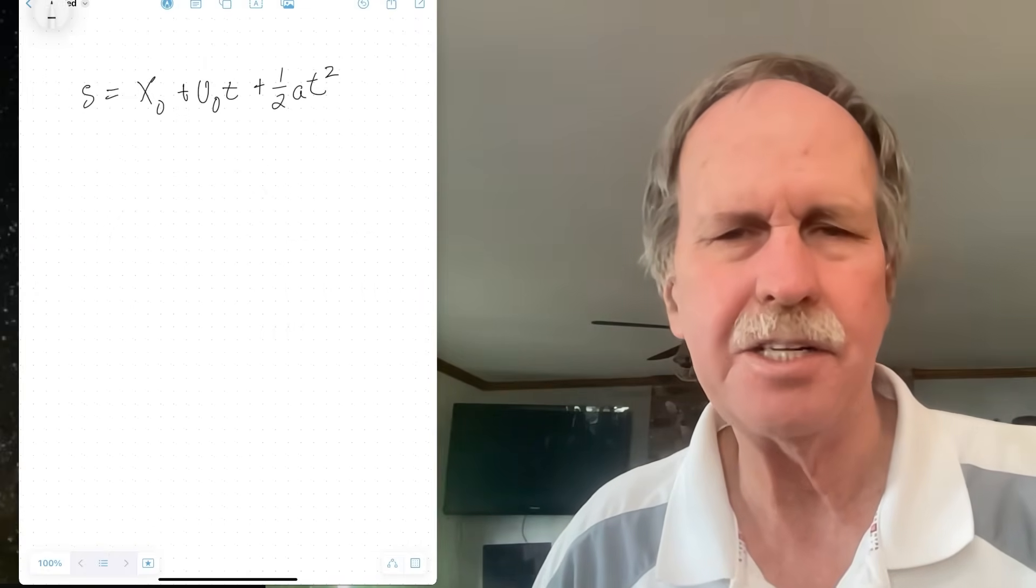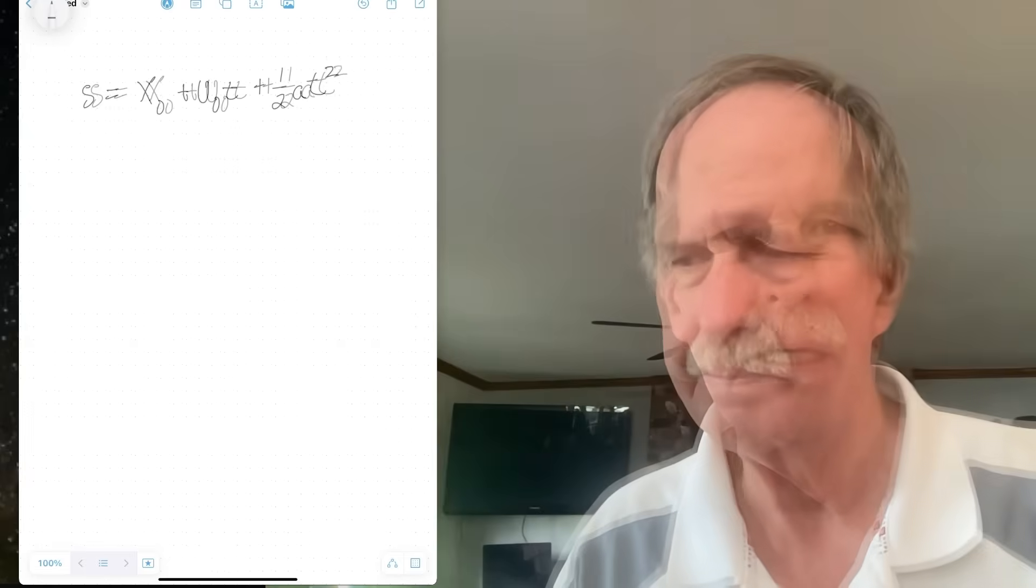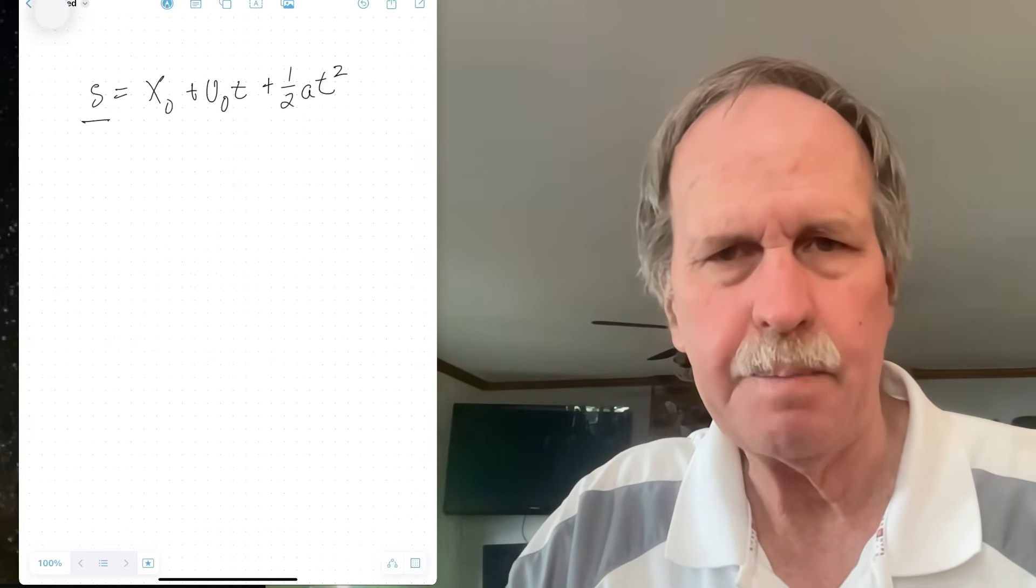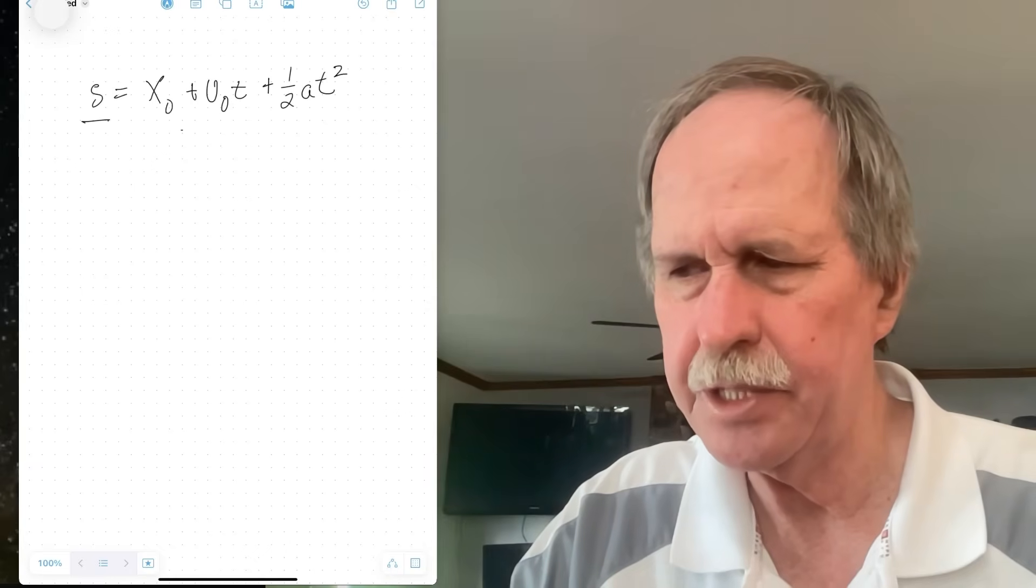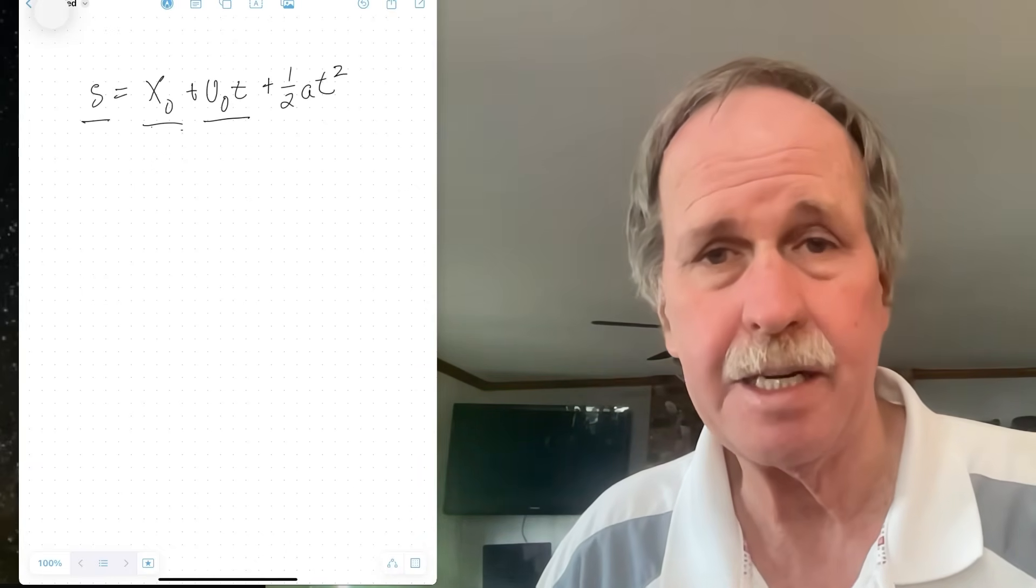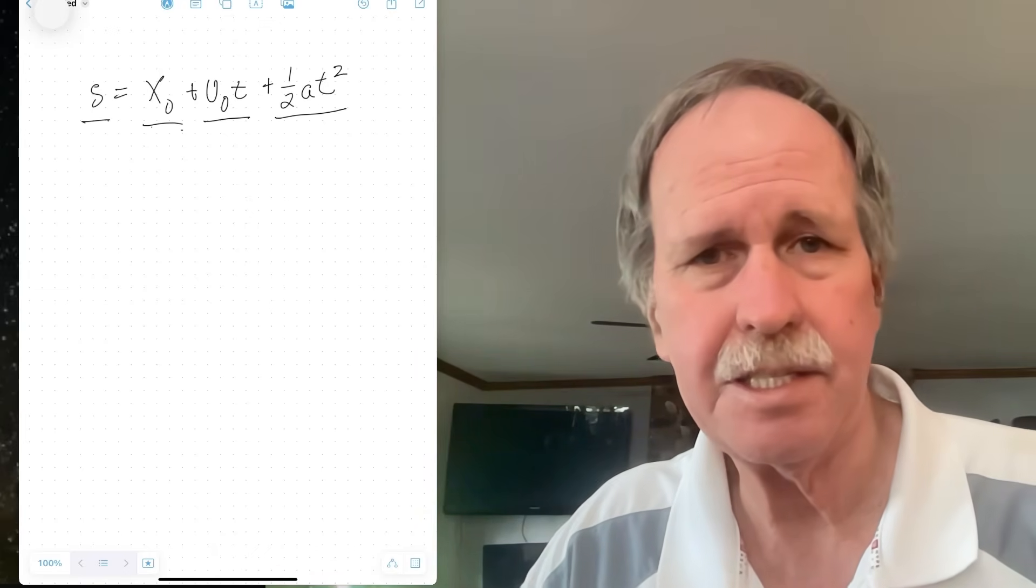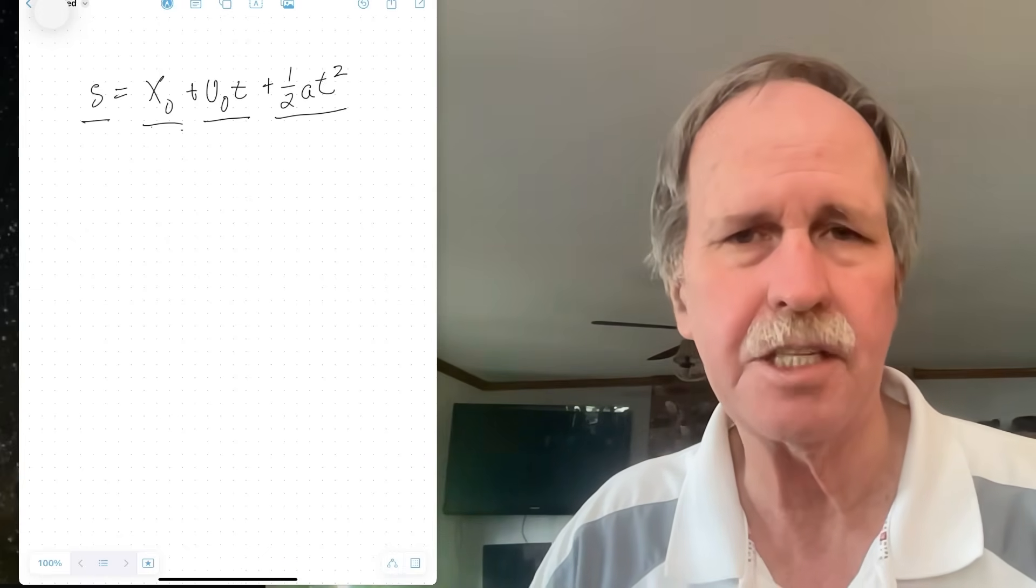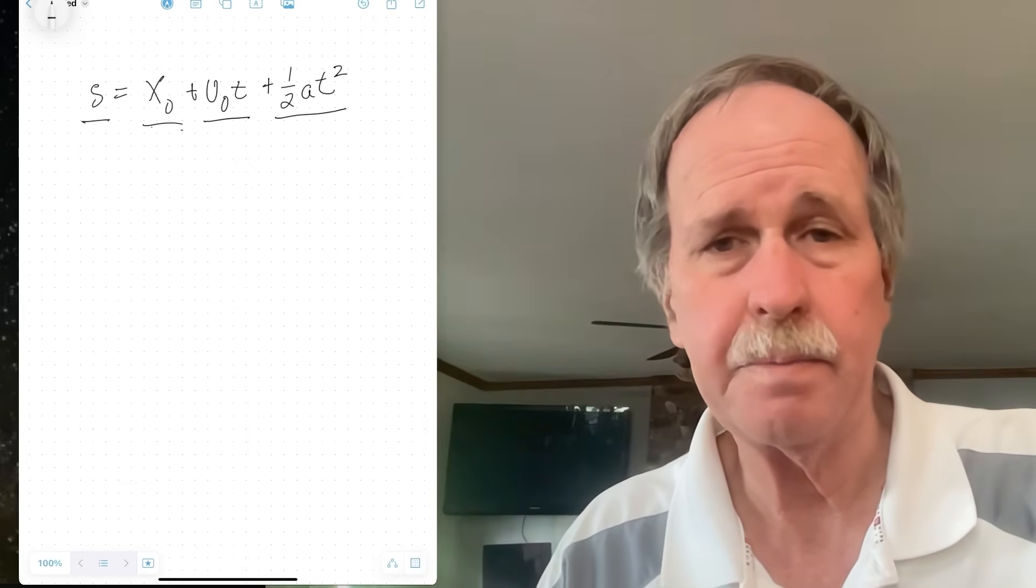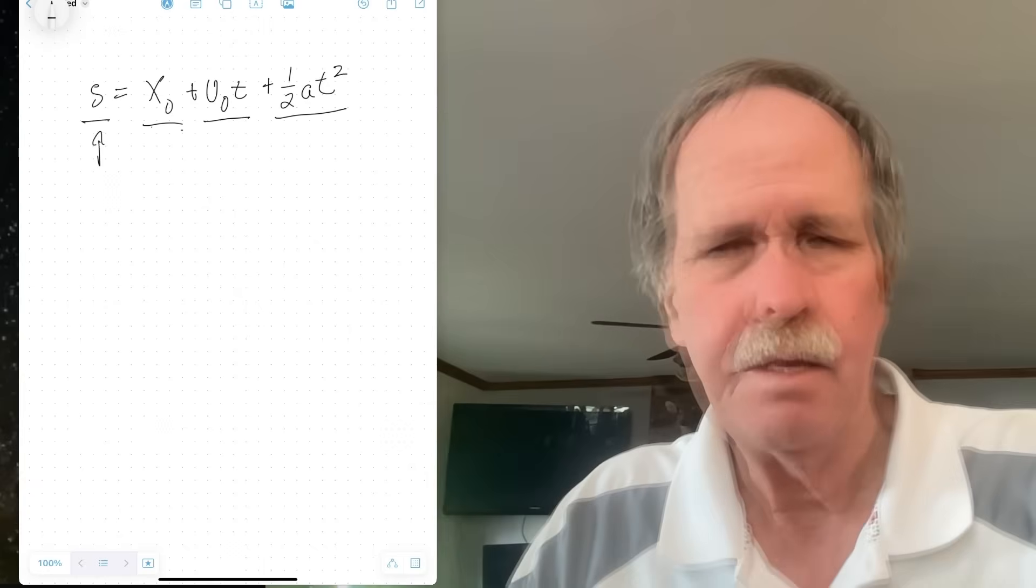So here we have a pretty classic kinematic equation in physics. This is the displacement or the distance formula. The distance that an object travels is related to its starting position X₀, its starting velocity V₀ times the time that it travels, and then this term, which relates the time to acceleration, ½at². It's something that you add to the starting velocity. Let's have a look at this from a physics standpoint. What is this distance?